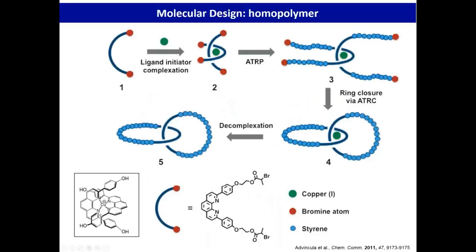The scheme looks like this: we take a phenanthroline ligand, complex it with copper — the end groups contain an ATRP initiator — and then grow a polystyrene arm by polymerization. Finally, using a ring closure ATRC reaction, we end up with two rings that are catenated. Then by decomplexation — removing the copper ion — we have the decomplexed catenated structure.